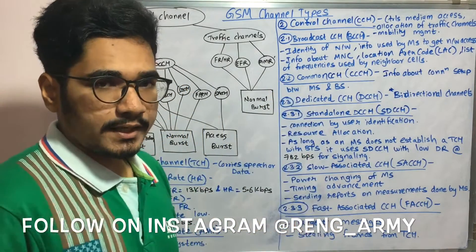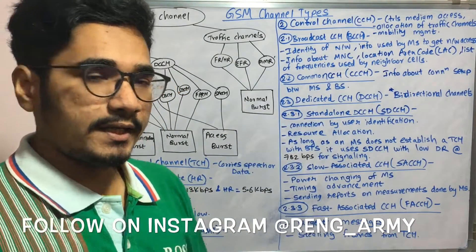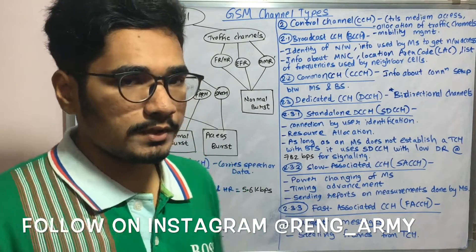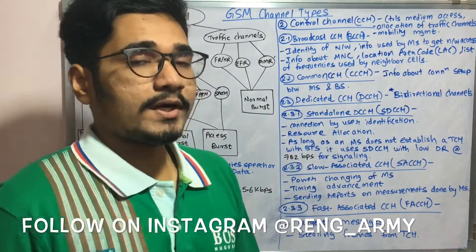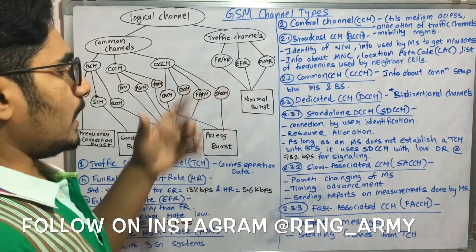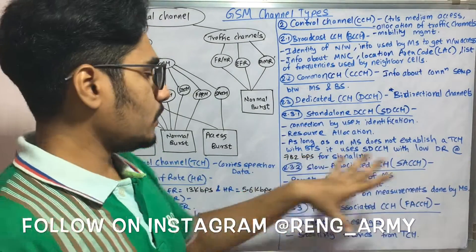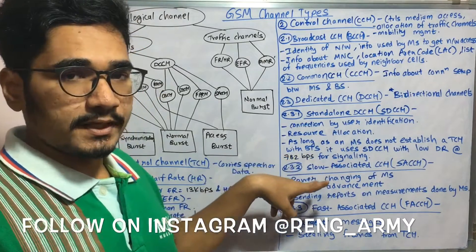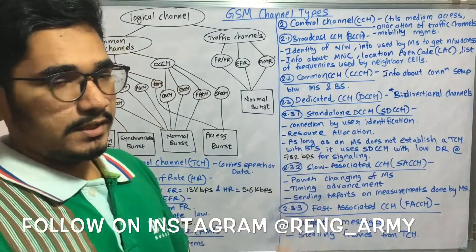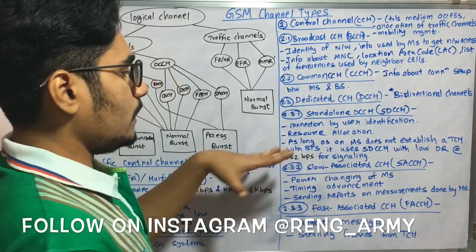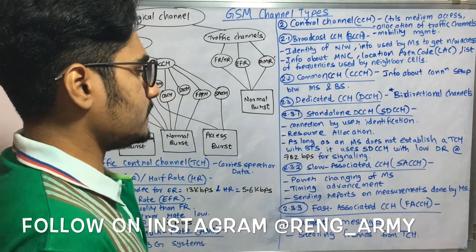The standalone DCCH (SDCCH) establishes connections based on user identification — verifying whether the user is a valid or legal user — and handles resource allocation. If a mobile station cannot establish a traffic channel (TCH) with the BTS, it uses SDCCH for signaling at a low data rate of about 782 bits per second.